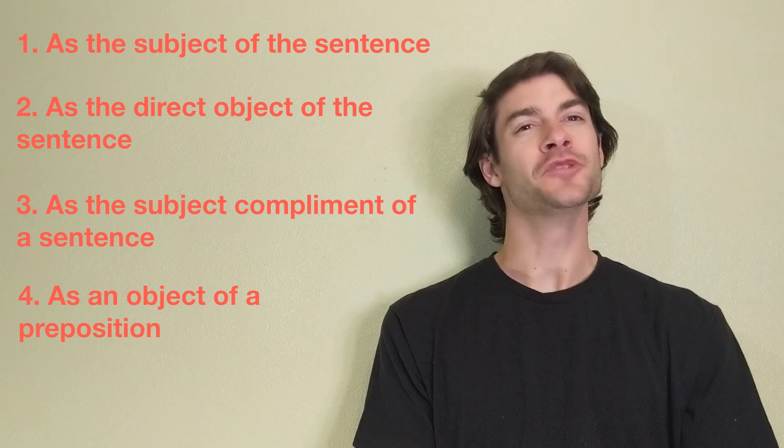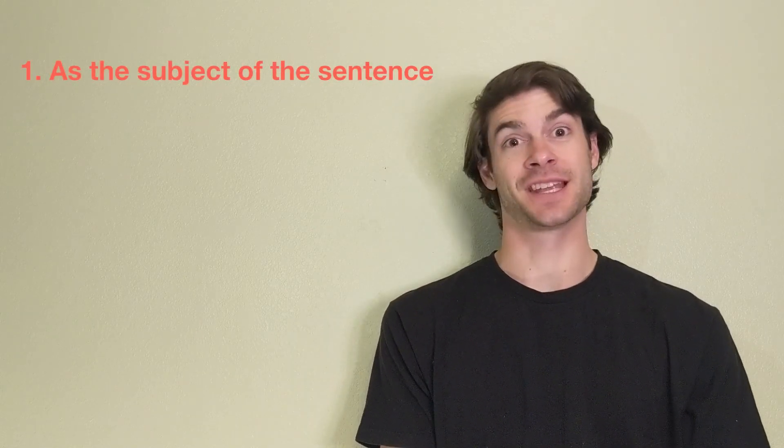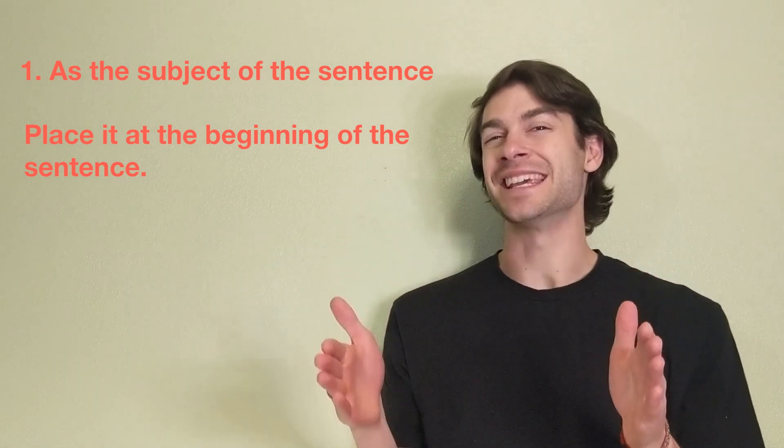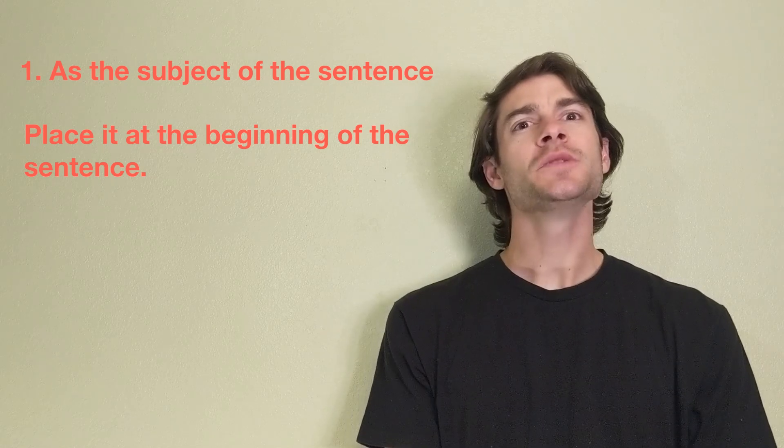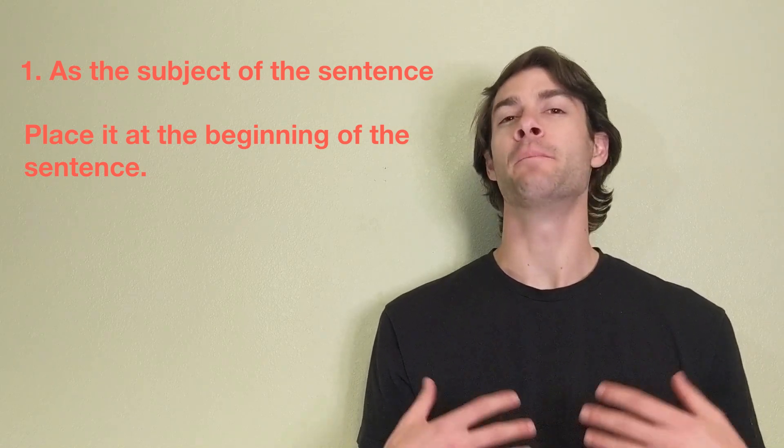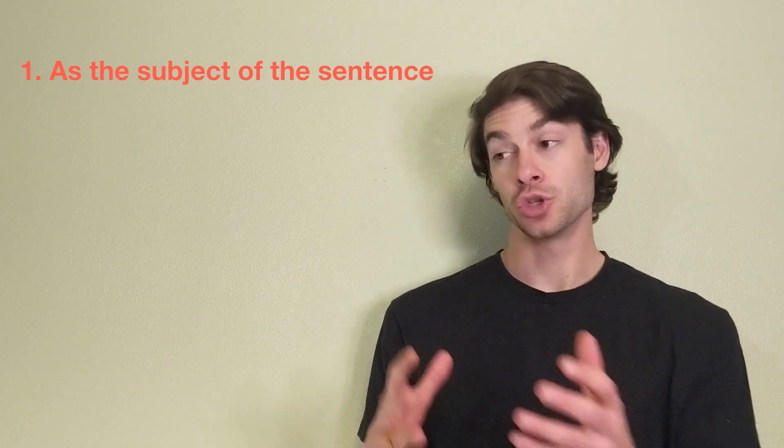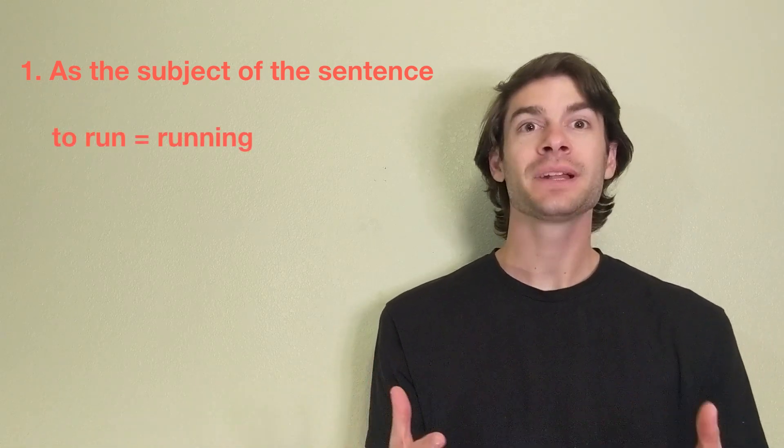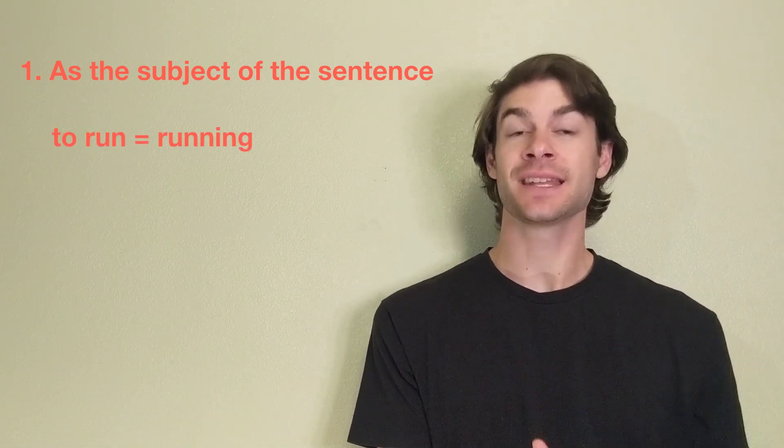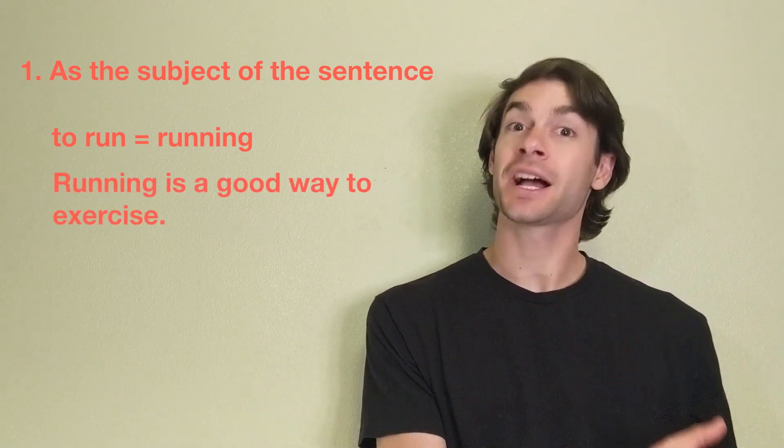Let's look at a few examples of these uses. First, when we use a gerund as the subject of the sentence, we place it at the beginning of the sentence. Let's say, for example, we want to tell someone about the benefits of going for a run. We can conjugate the verb to run into the gerund form running, and place it at the beginning of the sentence to say, running is a good way to exercise.